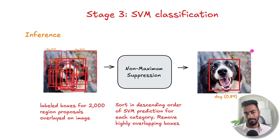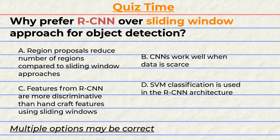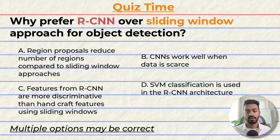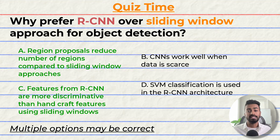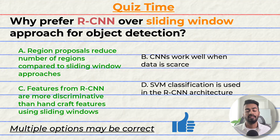Quiz time — have you been paying attention? Why prefer RCNN over sliding window approaches for object detection? A) Region proposals drastically reduce the number of regions compared to sliding window approaches. B) CNNs work well when data is scarce. C) Features from region proposals are more discriminative than handcrafted features from sliding windows. D) SVM classification is used in the RCNN architecture. The correct answer is A and C.